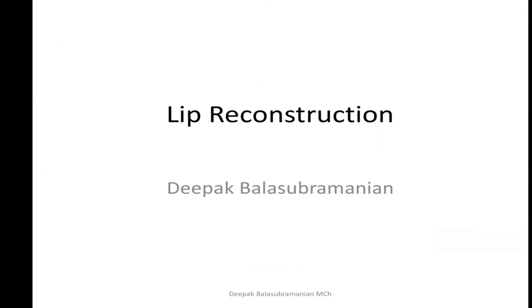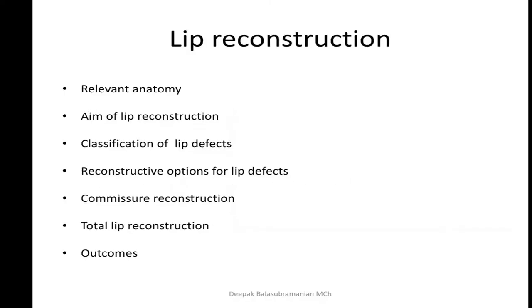The second presentation is on lip reconstruction. Lip reconstruction is quite challenging because the lip is a far more complex structure than it appears — it is not only part of the aesthetics of the face but also functionally important as part of the oral sphincteric mechanism. There are several ways to reconstruct the lip: borrowing tissue from the lip itself or from adjacent sites. The location and size of the lip defect dictates what flap is used.